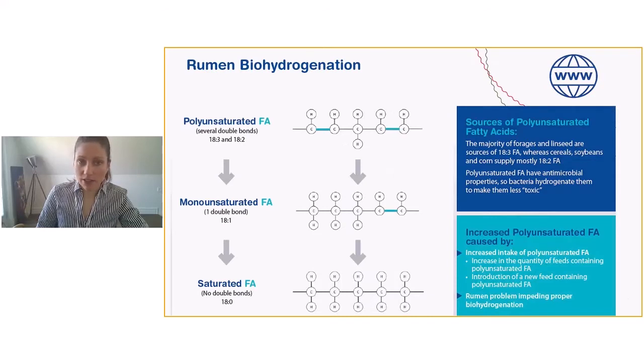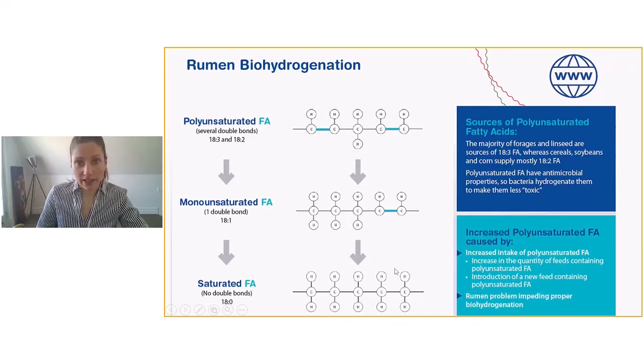This is a document that you can find on our website that summarizes biohydrogenation that occurs in the rumen. If you ever need to use this tool, you can go on our website and download it. Biohydrogenation is the process of undoing double bonds by attaching hydrogen to have saturated fatty acid that will then move to the intestine and into the mammary gland to produce de novo fats.